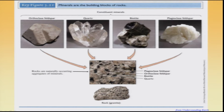For example, if you take granite, it is comprised of orthoclase feldspar, quartz, biotite, and plagioclase feldspar. It is mostly an aggregate of different minerals — and that is what a rock is: an aggregate of different minerals. So here we have plagioclase, orthoclase, biotite, and quartz as the composition.